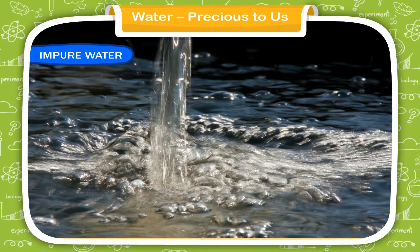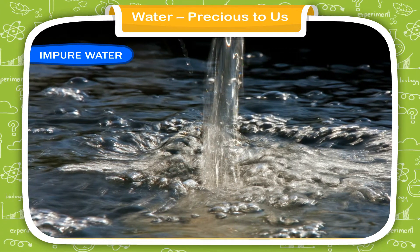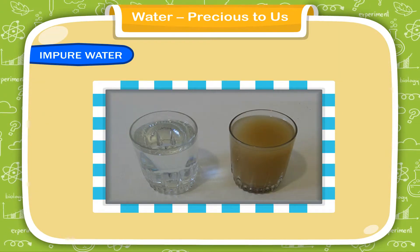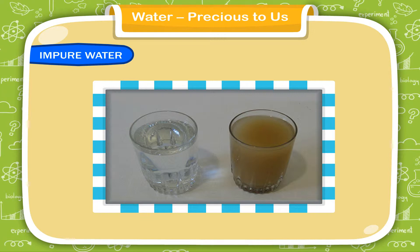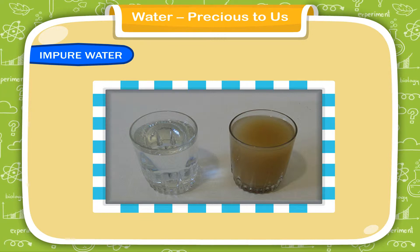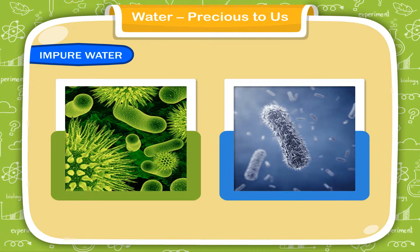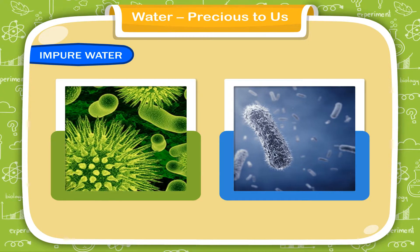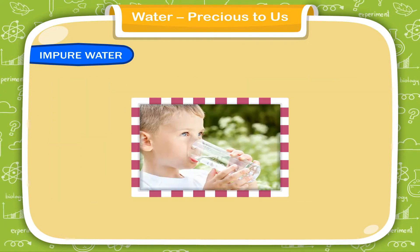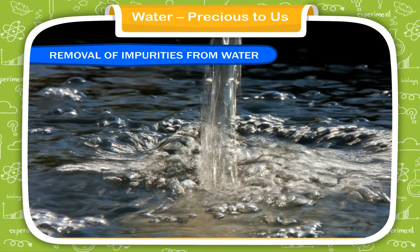Impure water: most of the water on Earth is impure, as it may have soluble or insoluble impurities. Impure water can cause many diseases because it contains harmful germs. So impurities in water must be removed to make it fit for drinking.